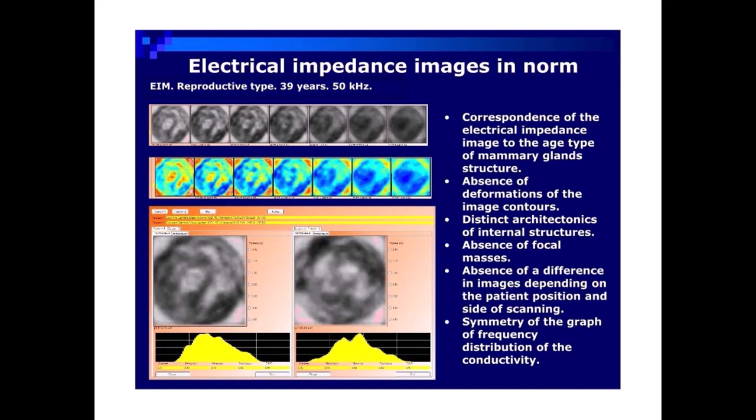EIM reproductive type, 39 years, 50 kHz. Correspondence of the electrical impedance image to the age type of mammary gland's structure. Absence of deformations of the image contours. Distinct architectonics of internal structures. Absence of focal masses. Absence of a difference in images depending on the patient position and side of scanning. Symmetry of the graph of frequency distribution of the conductivity.